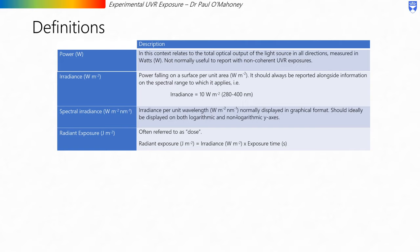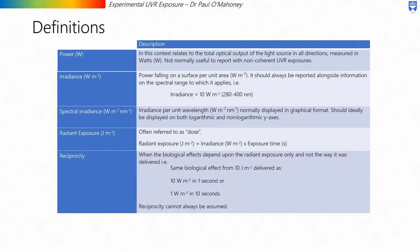Radiant exposure, measured in joules per meter squared, is often referred to as the dose. This is the most common measurement reported in UVR exposure studies. The radiant exposure is equal to irradiance multiplied by exposure time. Reciprocity is an important concept — it is when the biological effects depend upon the radiant exposure only and not the way in which it was delivered. For example, the same biological effect from 10 joules per meter squared delivered as either 10 watts per meter squared in one second or 1 watt per meter squared in 10 seconds. Reciprocity cannot always be assumed and shouldn't be assumed unless there is strong evidence to the contrary. Therefore, it is not sufficient to simply report radiant exposure; how the radiant exposure is delivered is just as important.